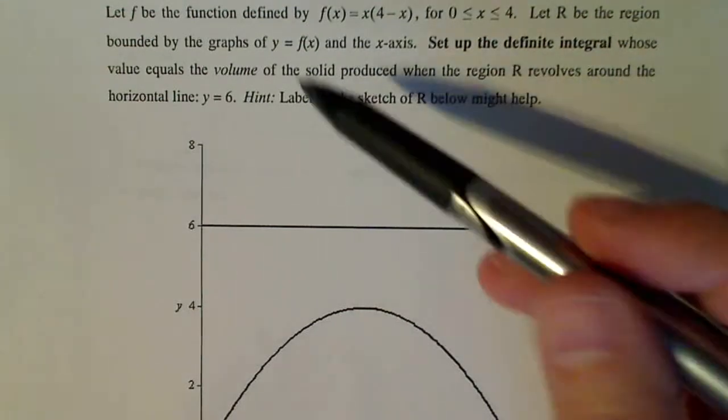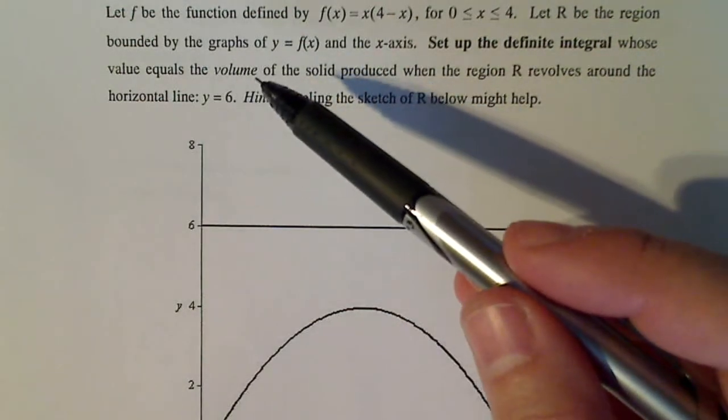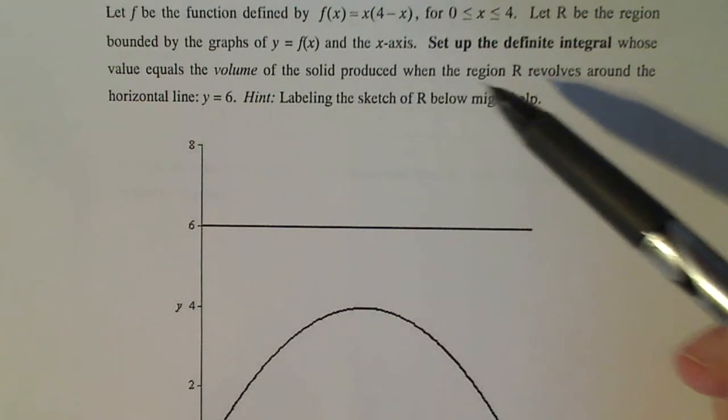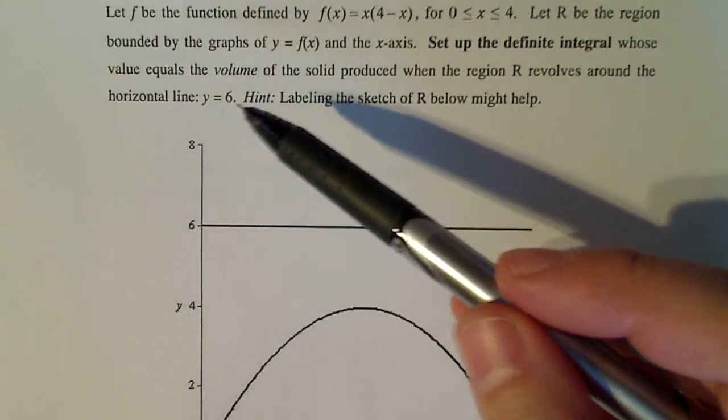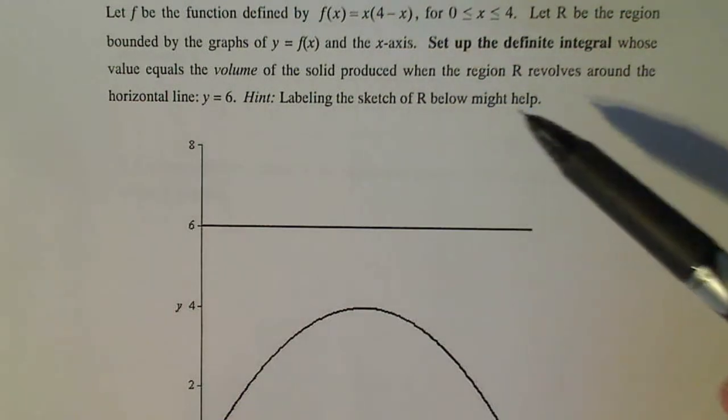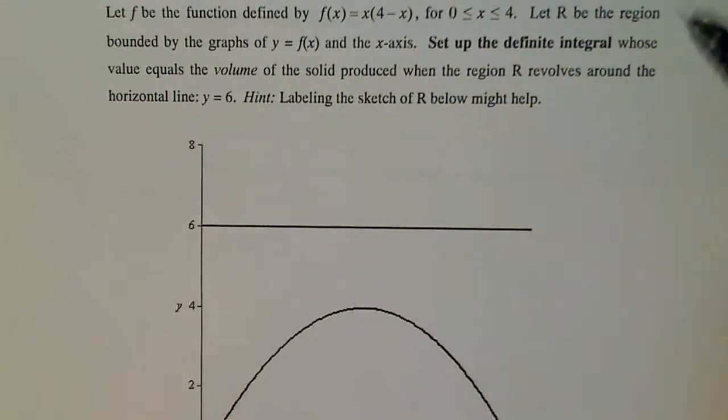Set up the definite integral whose value equals the volume of the solid produced when the region R revolves around the horizontal line y = 6. Hint: labeling the sketch of R below might help. Yeah, if you haven't figured that one out by now, that's good news and a great hint.